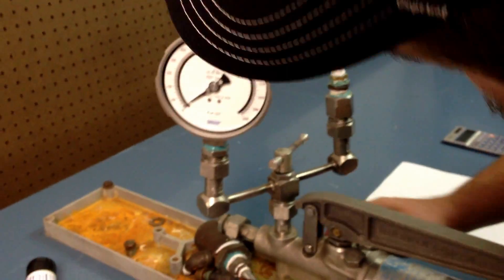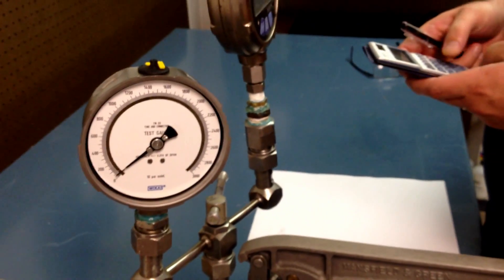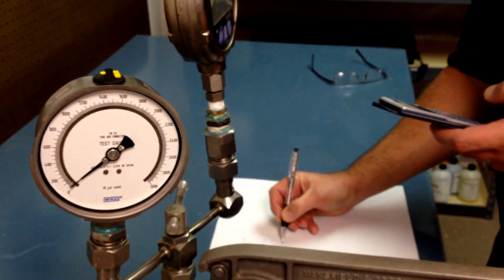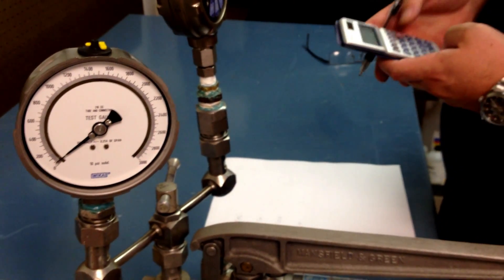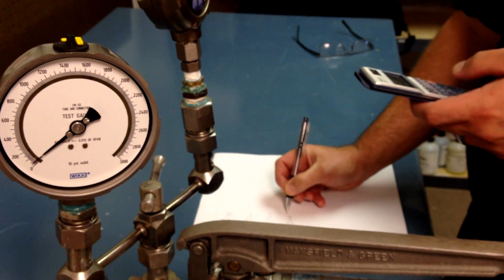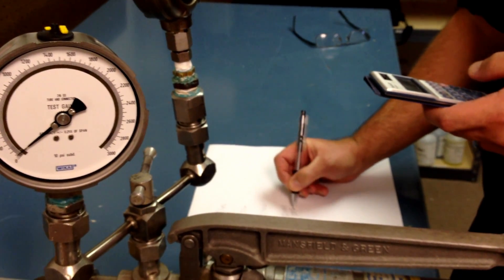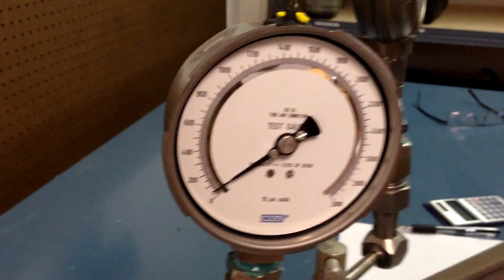So our first point is going to be 750, 1500, 2250 and 3,000. So let's start at the 750 mark, we're going to take this to 750 PSI and compare it against the test gauge.